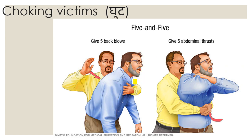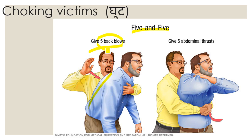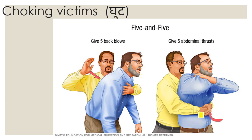If a person is not getting proper air due to a blockage from external material like food, they will start choking. For choking, use the 5-and-5 principle: give 5 strong back blows on the back side while the person is leaning forward, and then give 5 abdominal thrusts, lifting upward from the abdomen. This is the method for choking victims.